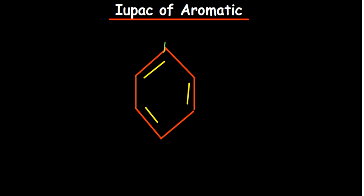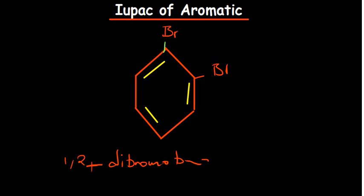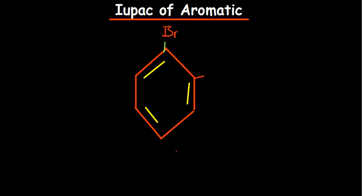That's the first rule: with a substituted aromatic compound, whatever is a substituent is taken as a prefix. In a case where you have two substituents, just as with normal structures, you give them positions. So it would be 1,2-dibromobenzene. The parent name remains benzene, but we give positions to whatever is attached.